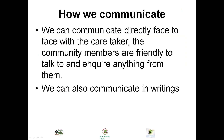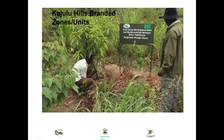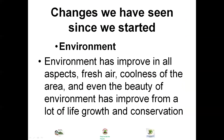We use normal communication methods: face to face, WhatsApp, telephone, and SMS. As I said earlier, every time we add different layers. You can see there's a mango, a croton, a pineapple, lemongrass, and napier grass. We have observed several changes: the environment has improved in all aspects — fresh air, coolness of the area, and beauty of the environment from life growth and conservation.